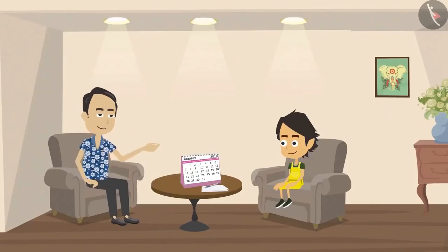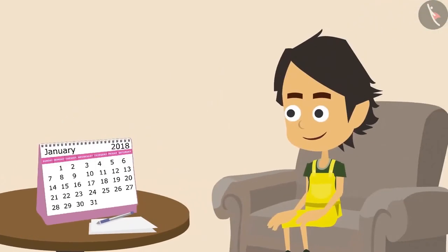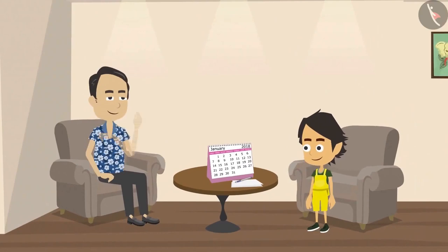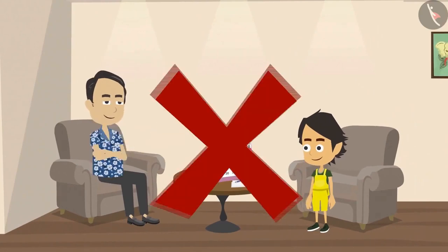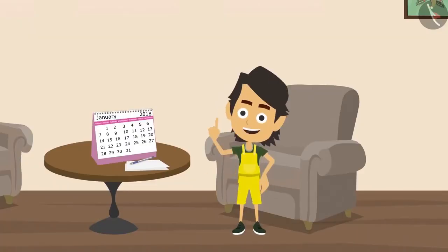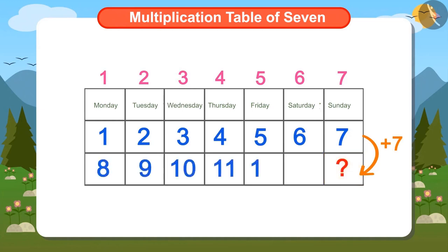Ayushman waits the whole week for Sunday, so it is easy for him to remember that today the date is 7th and the day is Sunday. Ayushman's father asks one more question: if today the date is 7th and the day Sunday, which will be the date on next Sunday? This can be answered immediately by looking at the calendar. But Papa wants Ayushman to tell next Sunday's date without looking at the calendar. Ayushman knows that there are 7 days in a week, so if 7 is added to today's date, the 7th, then next Sunday's date will be 14.